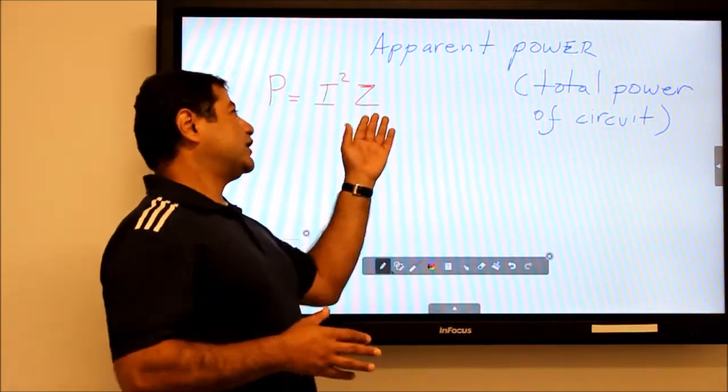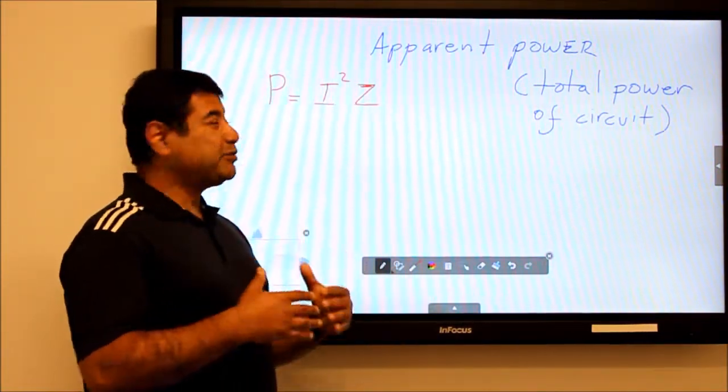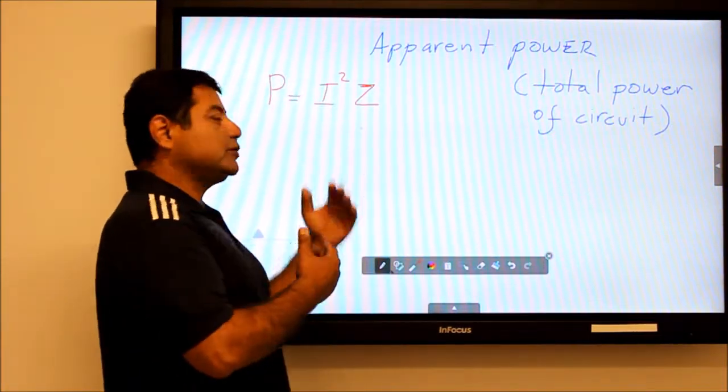Don't get confused by the fact that I use the letter Z. It's still the resistance, but because there's an inductor, we have to use the impedance for Z.